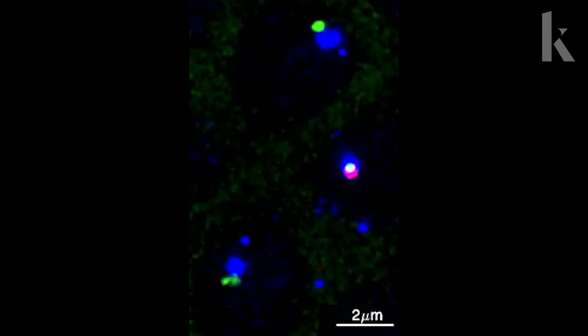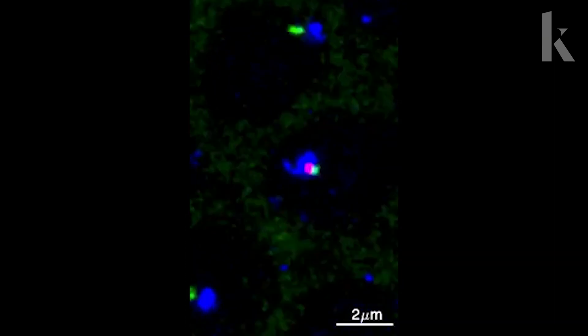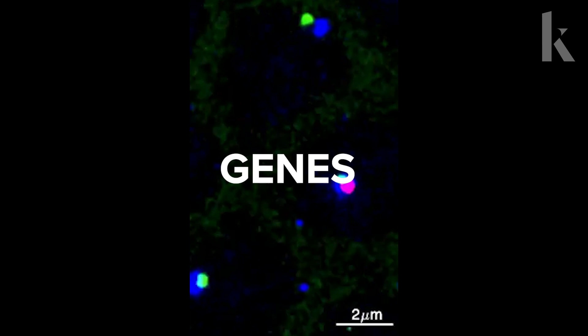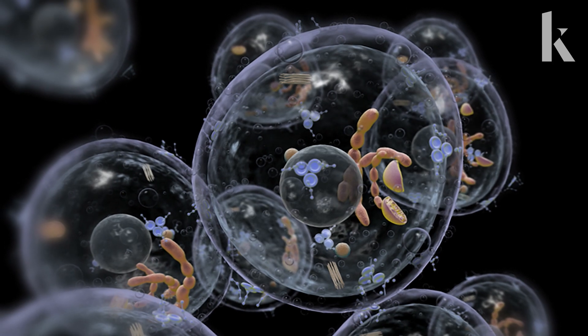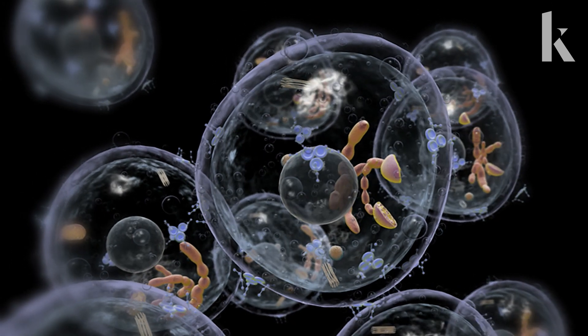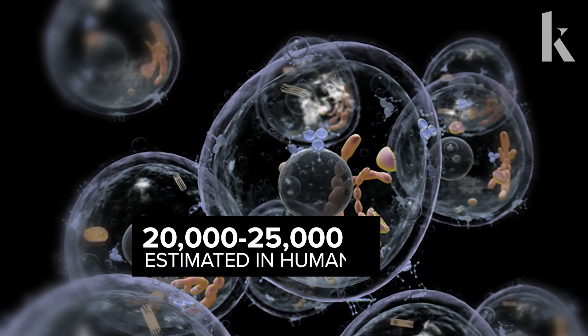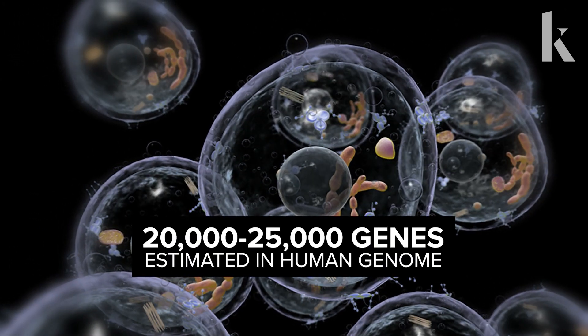These bursts of color aren't fireworks. They're much smaller. These are genes inside a cell springing to action. Each cell in our body—skin, muscles, brain, or gut—contains the same set of genes, about 20,000 in total.